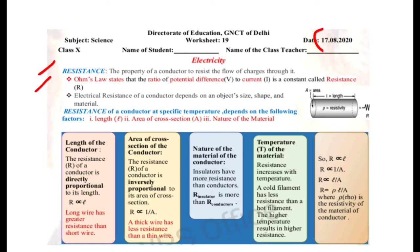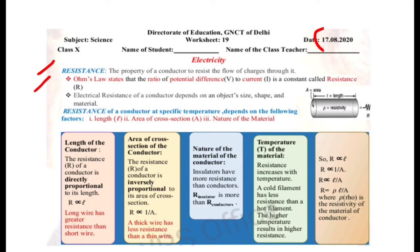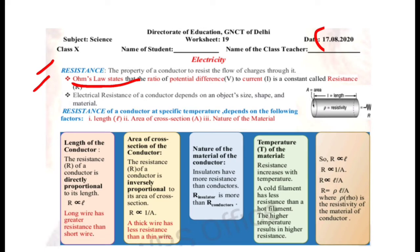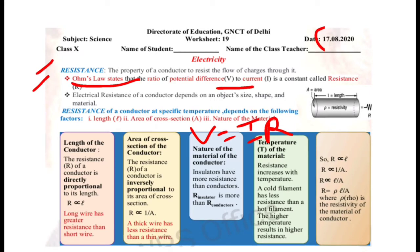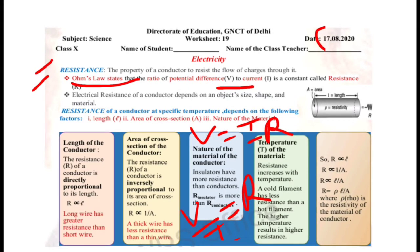Today we are going to talk about resistance in electricity. Resistance is a property of a conductor to resist the flow of charges through it. Flow of charge is known as current. Ohm stated that V is equal to IR — the ratio of potential difference to current is constant, and that constant is called resistance. So V upon I equals R.